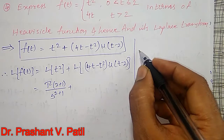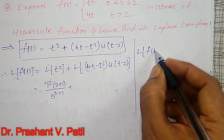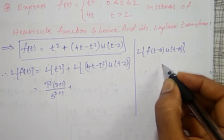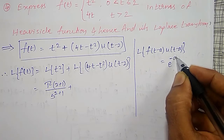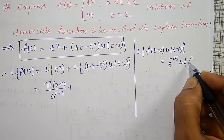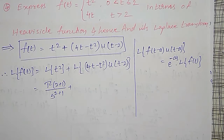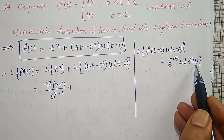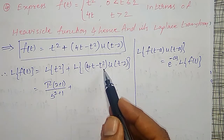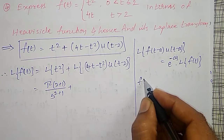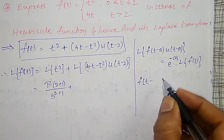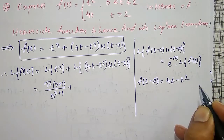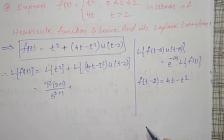The shifting theorem states: L{f(t − a) · u(t − a)} = e^(−as) · L{f(t)}. Here t is shifted: f(t − a) shifted to f(t). Comparing with our expression, a = 2, and f(t − 2) = 4t − t².